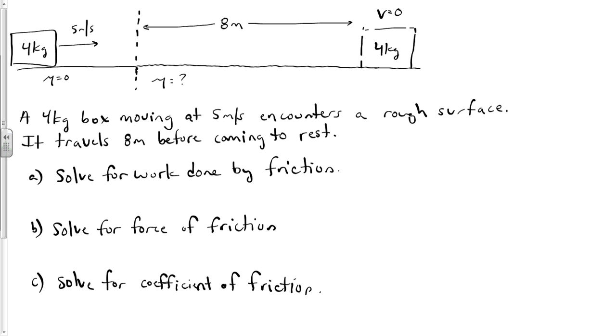A 4 kg box moving at 5 m/s encounters a rough surface. It travels 8 m before coming to rest. So this box is traveling at a constant 5 m/s along this plane.